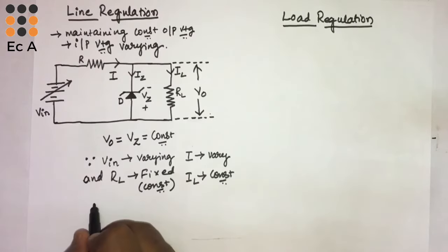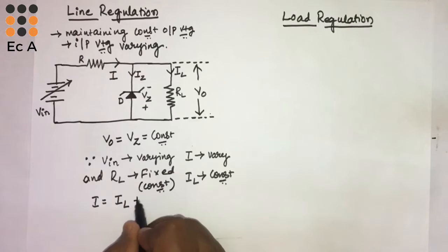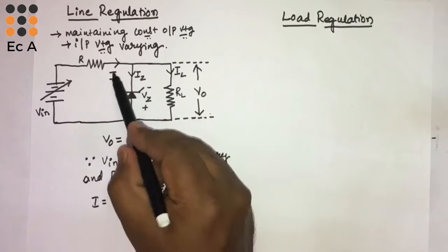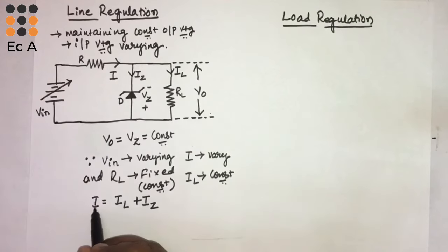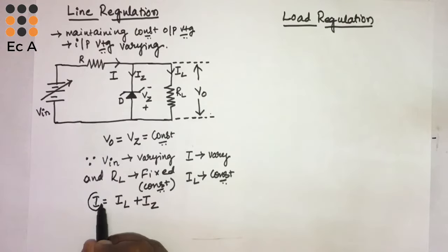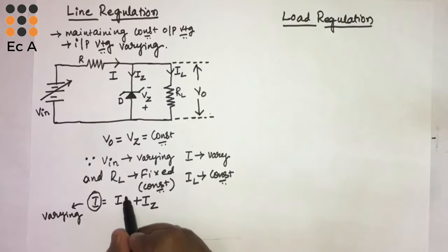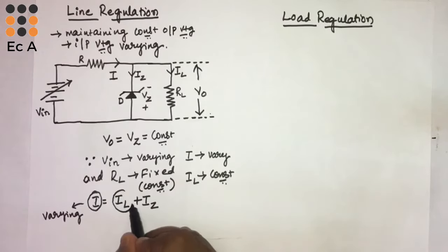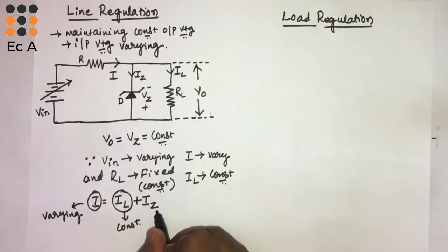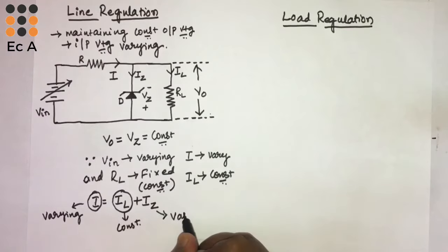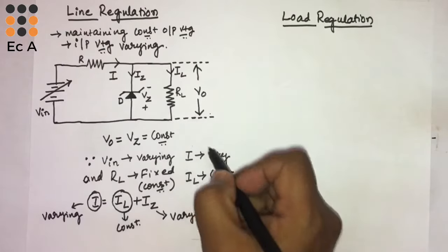We know that I is equal to I-L plus I-Z. Here I is varying, and I-L is constant.